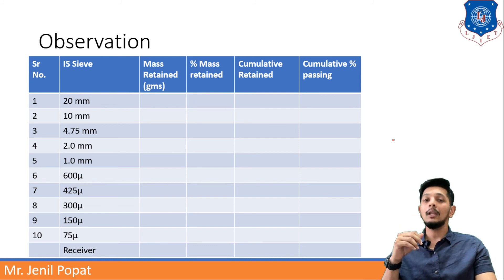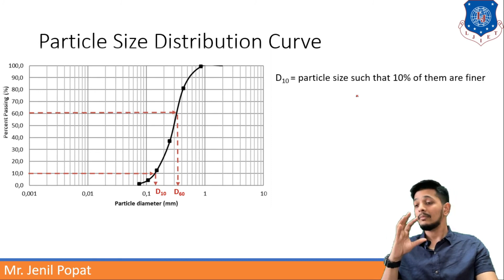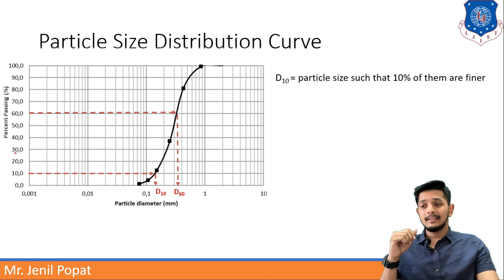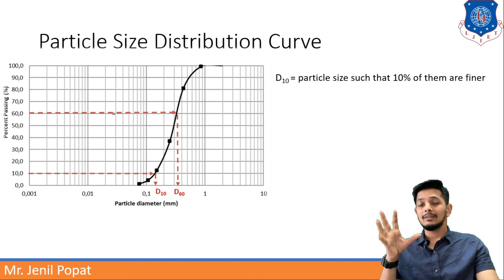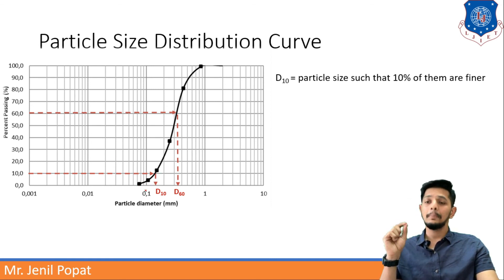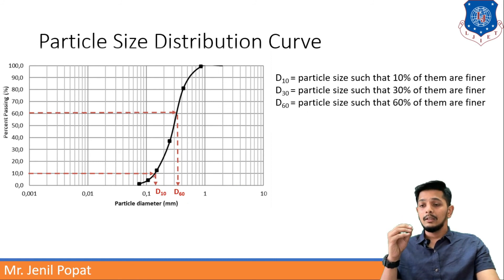From the observation table, you will prepare a graph which is called the particle size distribution curve. Here, the S-shaped curve is seen. The Y-axis is percentage passing and the X-axis is showing particle diameter in mm. This is a semi-logarithmic graph. The values are plotted and the graph in this S-shape can be obtained. Three points are very important: D10, D30, and D60.